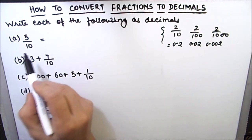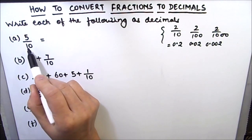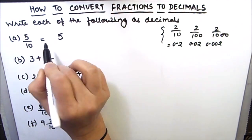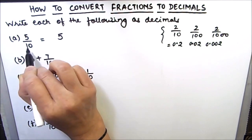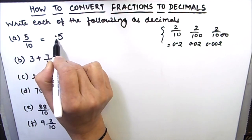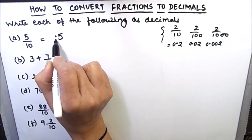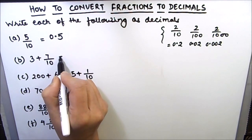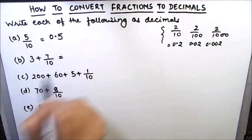So here in our question we are dividing 5 by 10. The answer will be 5, and as there is a single zero in the denominator, the decimal point will be placed after one digit from the right, giving us 0.5. The next one is 3 plus 7 by 10.